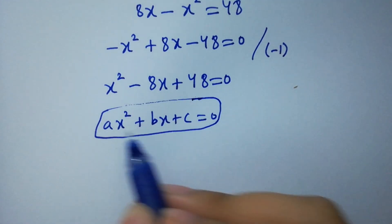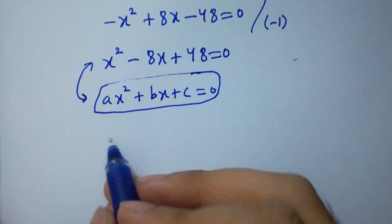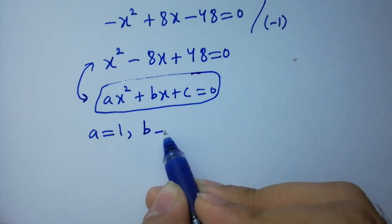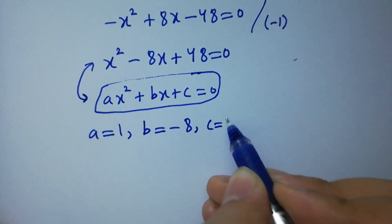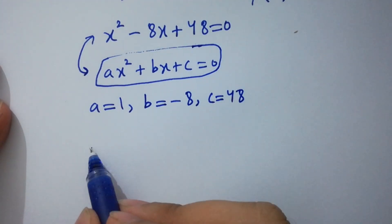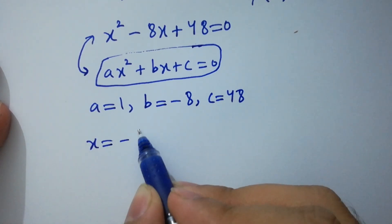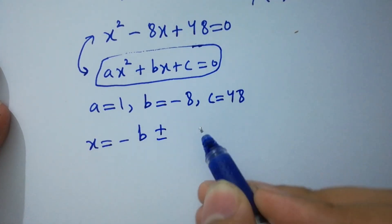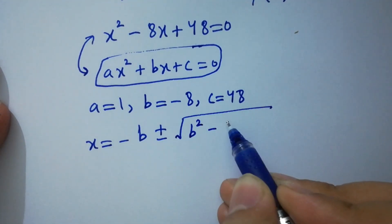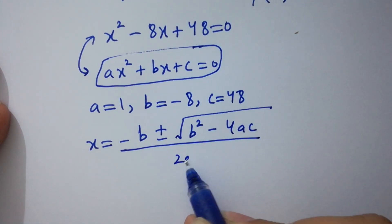By comparing, we have a equal to 1, b equal to minus 8, and c equal to 48. Applying the quadratic formula: x equal to minus b plus or minus square root of b squared minus 4ac, all over 2a.